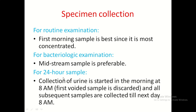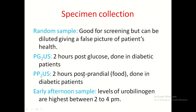Sometimes 24-hour urine collection is required. Collection is started in the morning at 8 AM; the first voided sample is discarded and all subsequent samples are collected until the next day at 8 AM — a 24-hour duration specimen. Random samples are good for screening, but their disadvantage is that they may be diluted, giving a false picture of the patient's health.